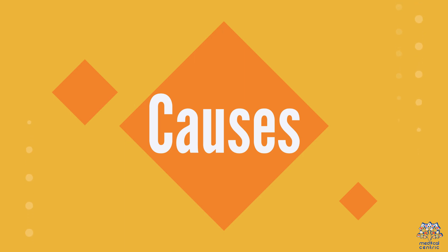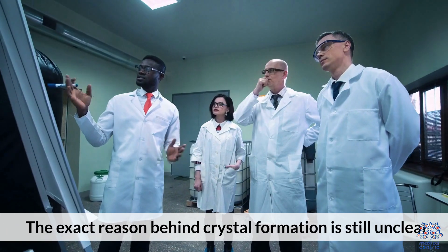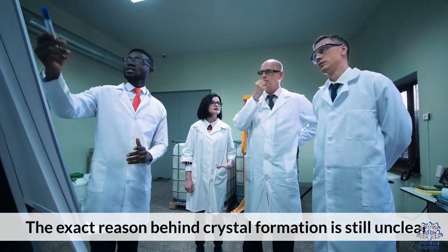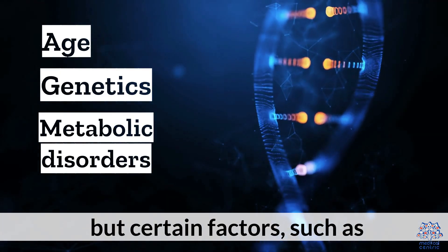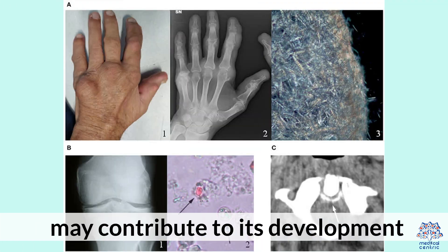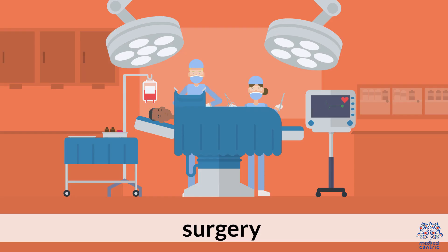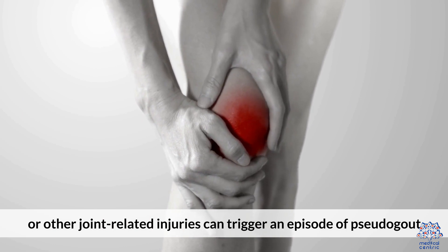Causes: Pseudogout is caused by the accumulation of calcium pyrophosphate crystals in the joints. The exact reason behind crystal formation is still unclear, but certain factors such as age, genetics, and metabolic disorders may contribute to its development. Joint trauma, surgery, or other related injuries can trigger an episode of pseudogout.